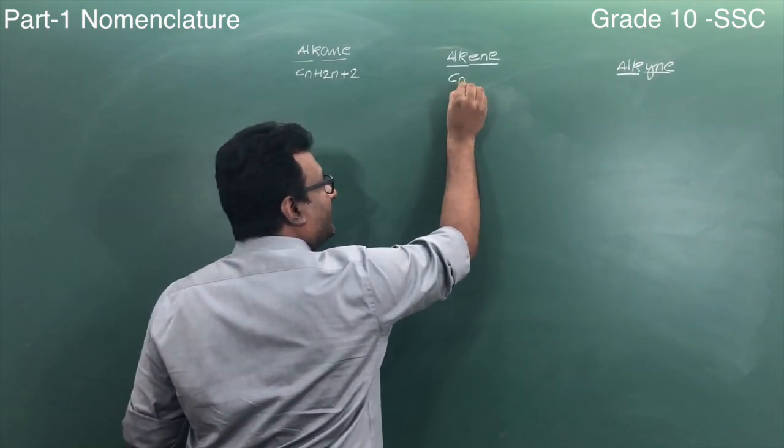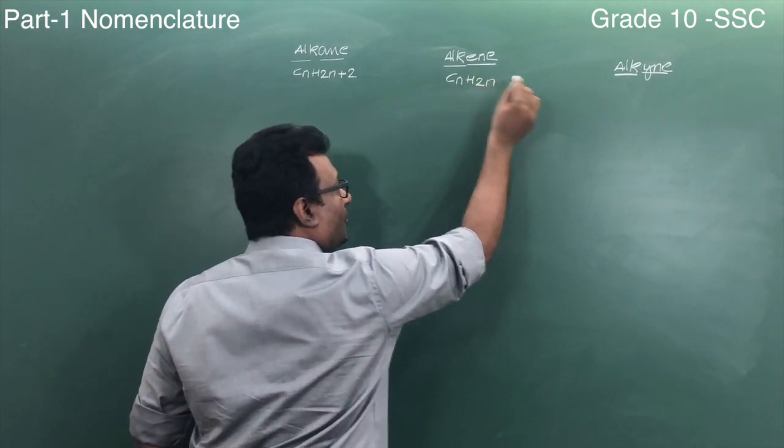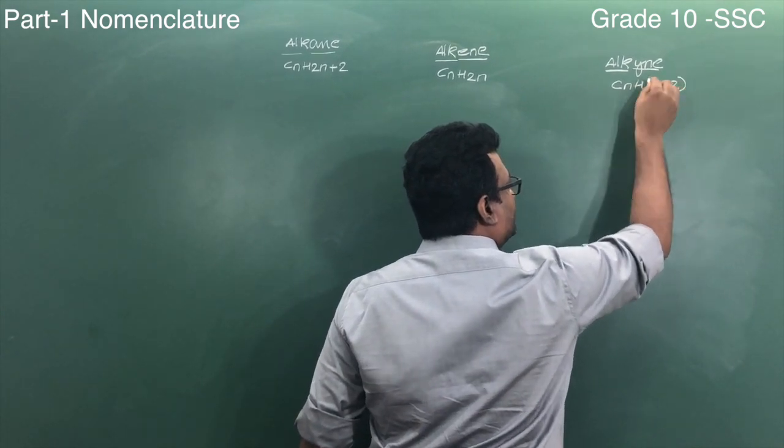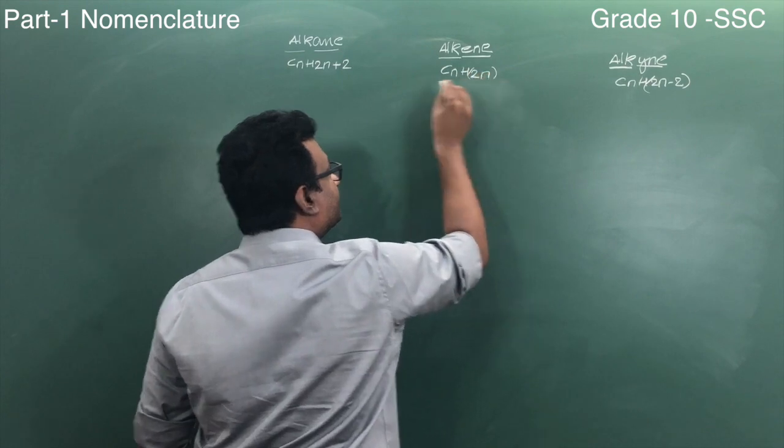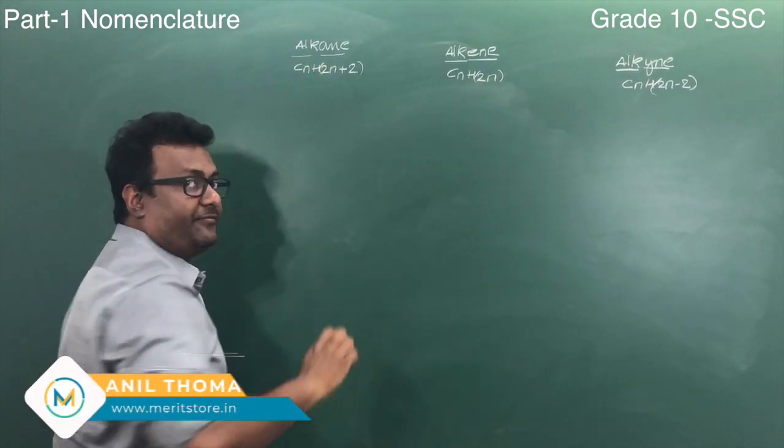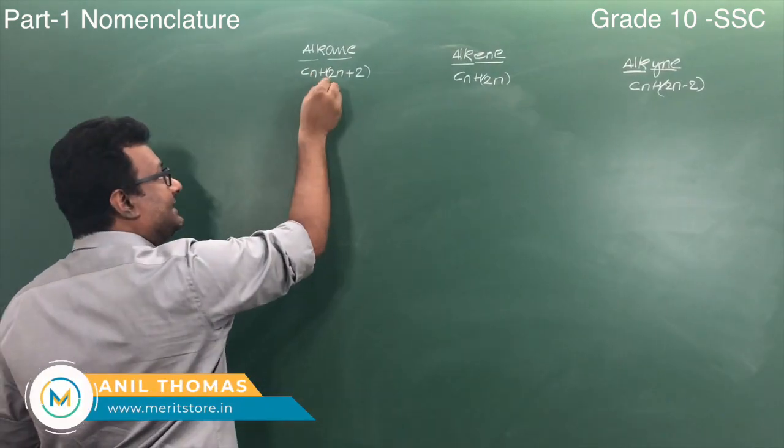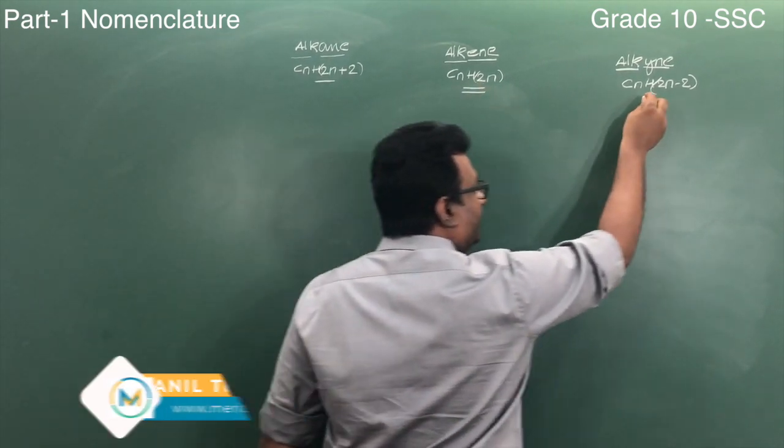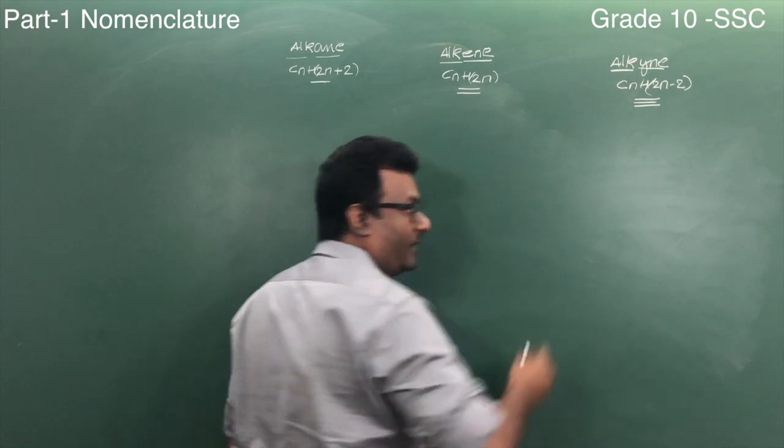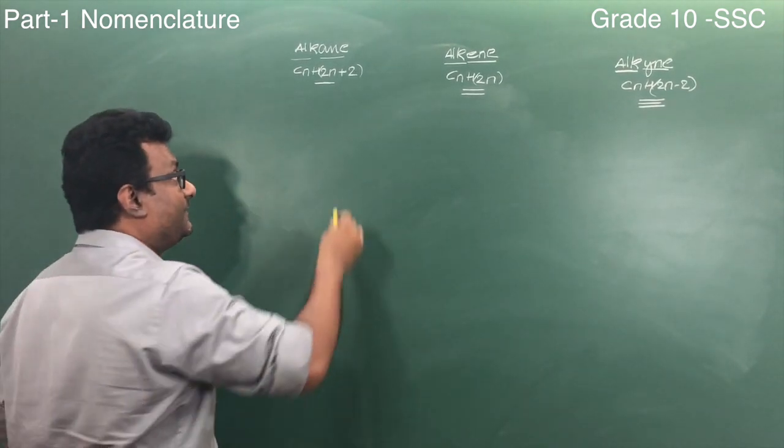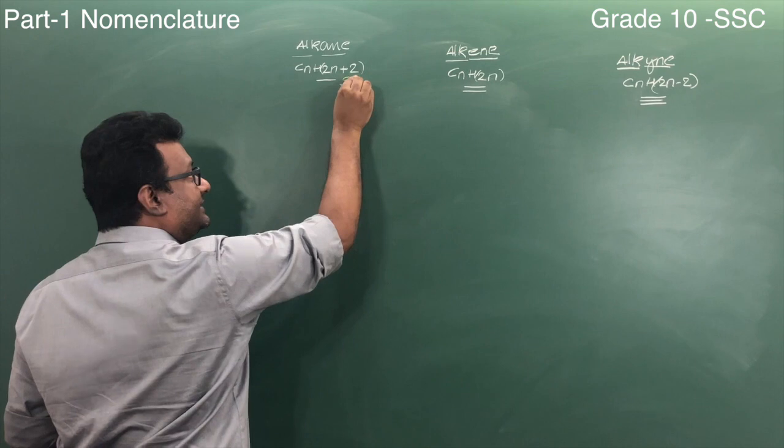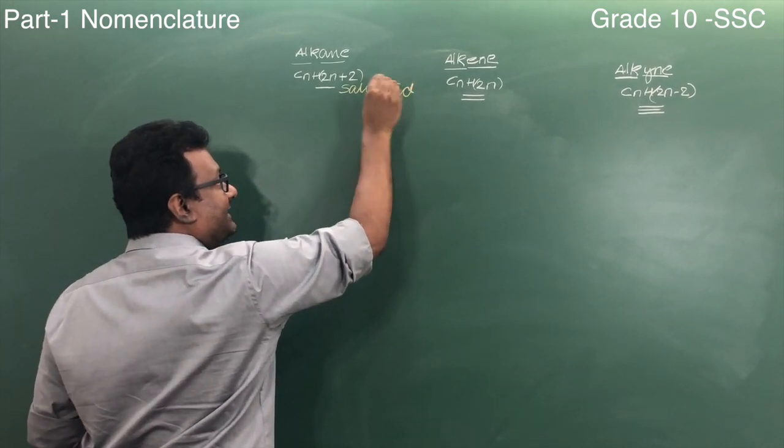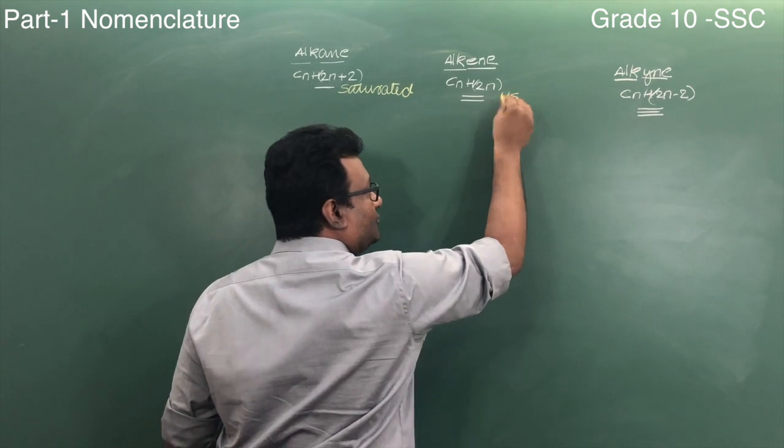General formula CnH2n and general formula CnH2n-2. The functional group for alkane is a single bond, alkene has a double bond, and alkyne has a triple bond. When I say single bond, I also mean to tell you that these are saturated, and these are unsaturated.